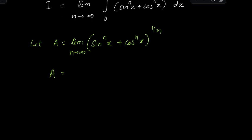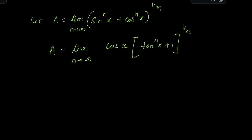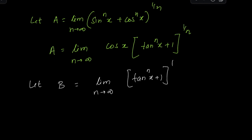In this expression, I'm going to bring out cos^n(x) as a common factor from inside the bracket. When I do so, cos^n(x) comes out under the influence of the 1/n-th root and becomes simply cos(x) outside. Inside, we're left with (tan^n(x) + 1)^(1/n). Let's call this term B, so B = (tan^n(x) + 1)^(1/n).